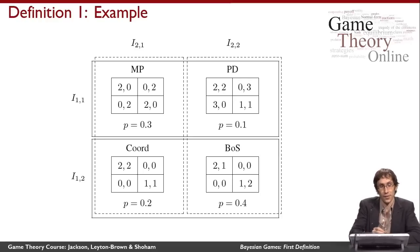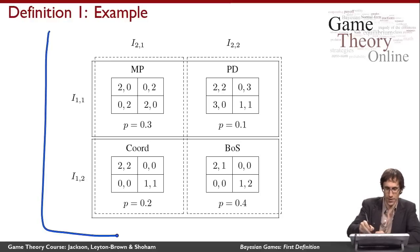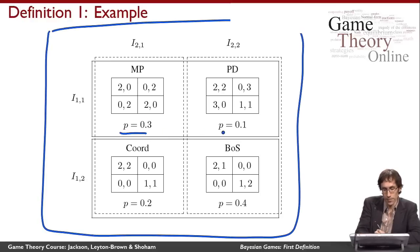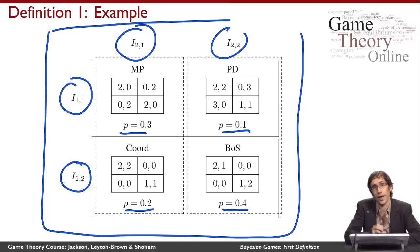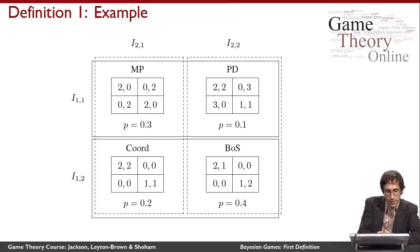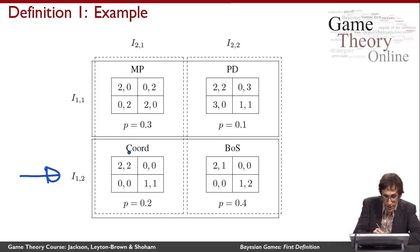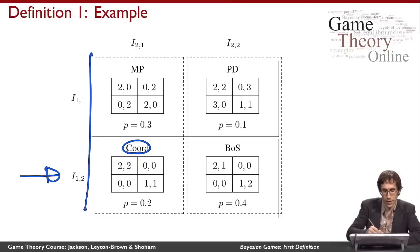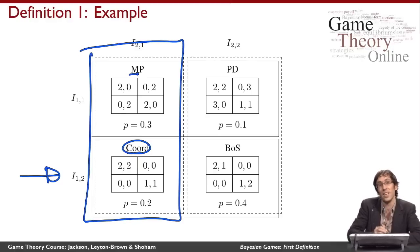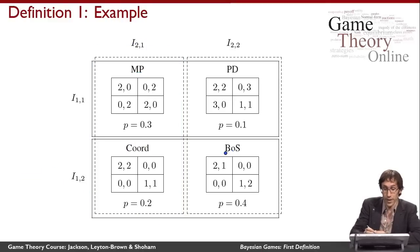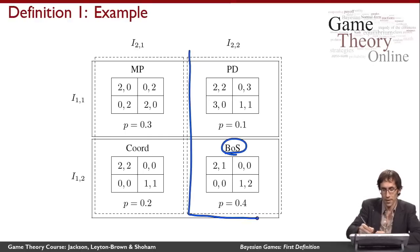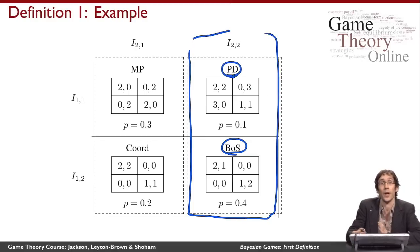Players do know everything about this overall setting — they know the common prior, they know their own equivalence classes, and they know their opponent's equivalence classes. So if I'm player one and I know I'm in my equivalence class, I also know that if the game is really Coordination (which I believe is possible), then player two thinks he's in his equivalence class and considers Matching Pennies possible even though I know it's not. Or if Battle of the Sexes is the real game, then player two thinks Prisoner's Dilemma is possible even though I know it's not.